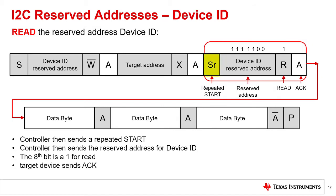The controller then sends a restart condition. After that, the controller sends the reserved device ID I2C bus address followed by the read bit. The target device acknowledges this reserved address. Note that the beginning of this third byte must be a restart. A stop followed by a start condition, or a stop with a restart condition, followed by access to a different target device, resets the target device state machine, and the device ID read cannot be performed.